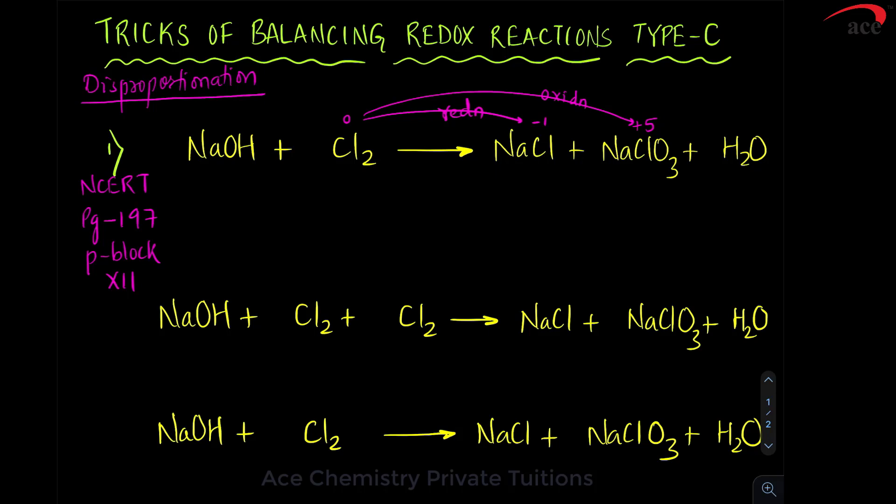All other elements, their oxidation state remains same. Now, how are you supposed to deal with such type of a reaction? Again, the dealing is similar to what we dealt in type B. What we do?